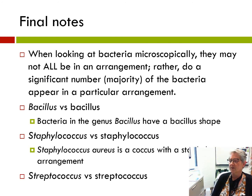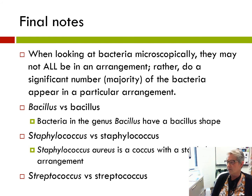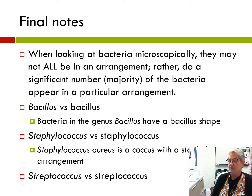When looking at bacteria microscopically — in your case using photos I will send — not all bacteria need to appear in a particular arrangement; some will be random, some may be diplo. When choosing whether or not there's an arrangement, ask whether a significant number or majority of the bacteria appear in a particular arrangement. For example, a slide of Staphylococcus aureus will have some random cocci and some diplo, but you will see that many of them appear in that staphylo or clustered arrangement.